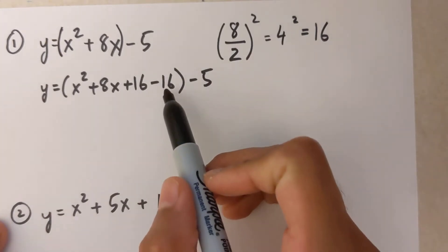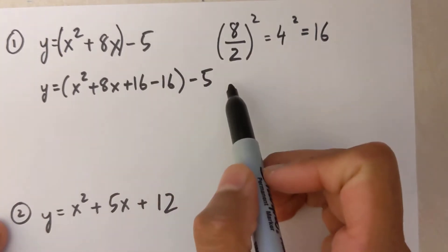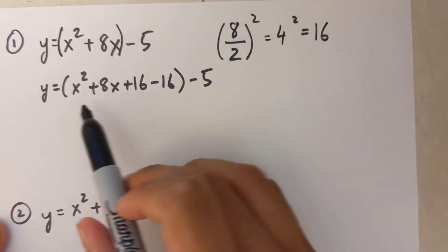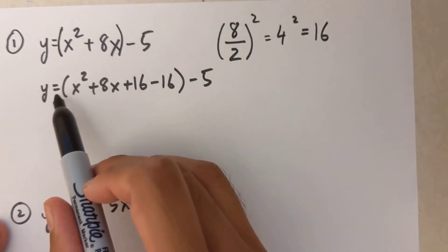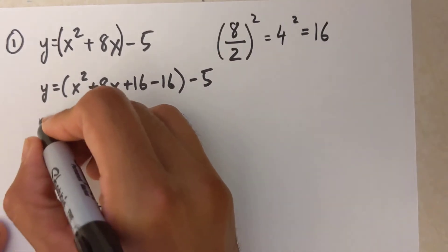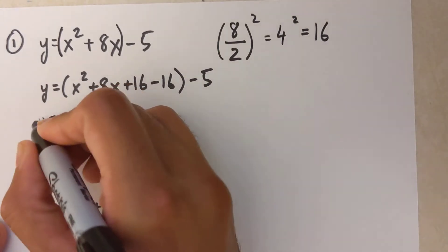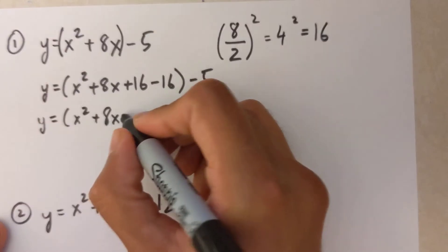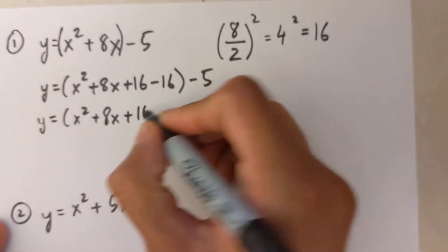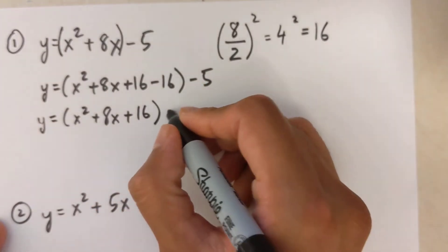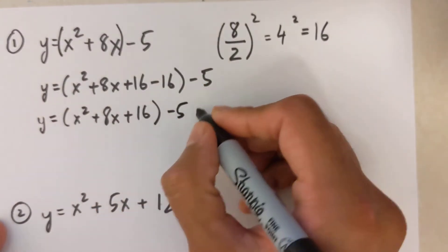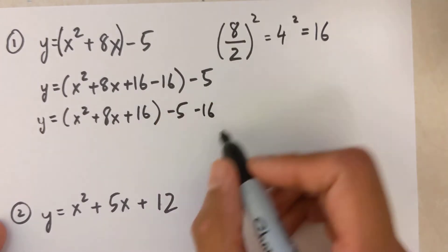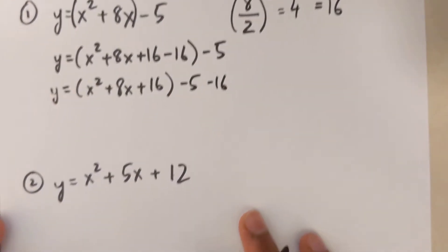The next step is to remove the negative number outside the bracket — normally you multiply by whatever is outside, but in this case it's just 1. So it becomes y equals x-squared plus 8x plus 16, and then minus 5 minus 16, so I've moved the 16 outside the bracket.